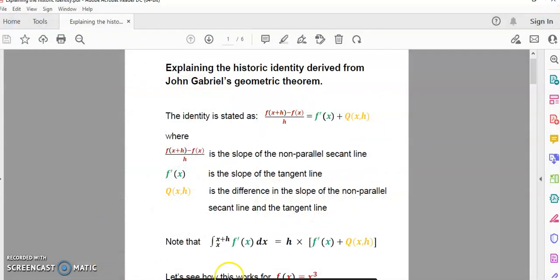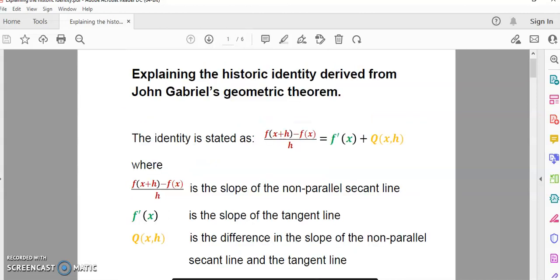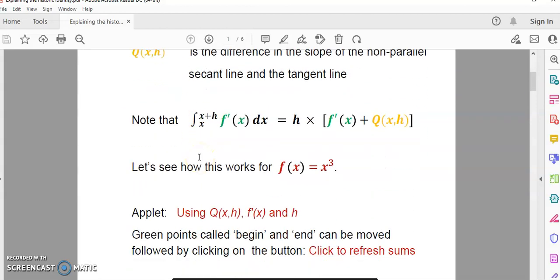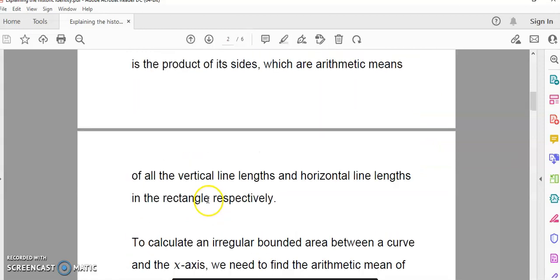Now first we begin with the identity which has been shown to you before and you'll note that in the mainstream this integral is actually equal to the product of two arithmetic means.